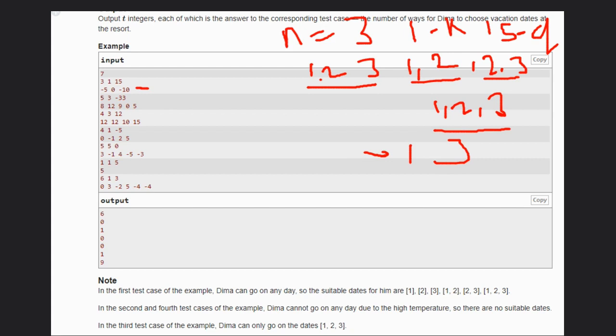For the second case, minus 33. Every temperature is above minus 33. So he can't plan to go. That's why answer is zero.